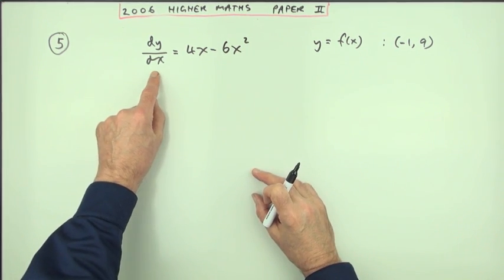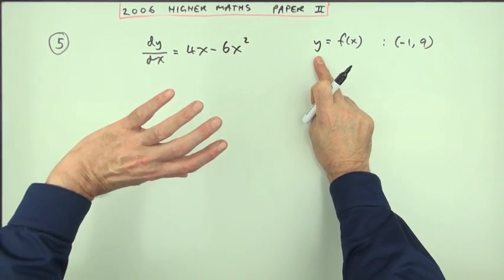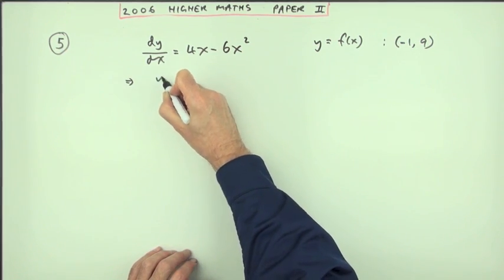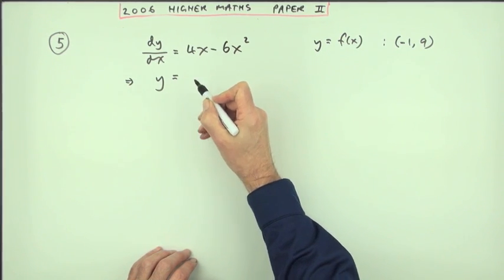So if you know the derivative and you want to go back to the original one, you'll do the opposite of differentiating, which is to integrate. So the next line should simply be to say, well in that case, to go back to y,